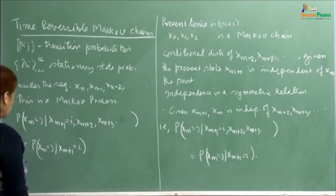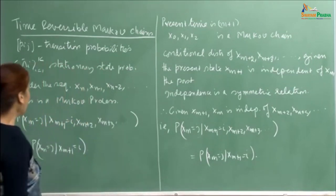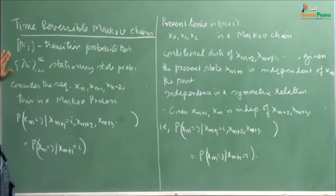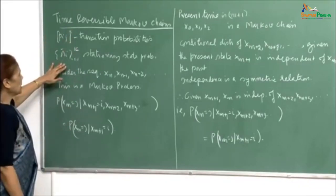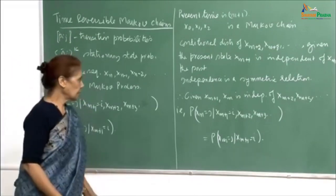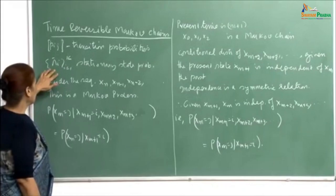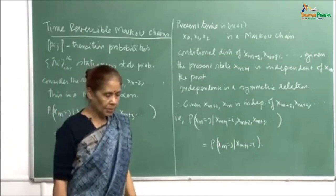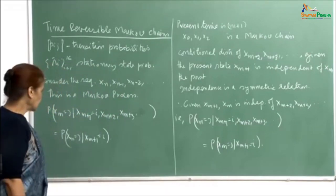Today we are going to look at an interesting phenomenon related with Markov chains, and that is time reversible Markov chains. Let us first start looking at what we mean by all this. Suppose you are given the transition matrix p_ij and the stationary state probabilities. We assume that the π_i's are all positive, because if a π_i is 0 then we can drop that state from the process. This is an ergodic process and the π_i's are the stationary probabilities; the system has gone on for some time, so we are looking at the stationary part.